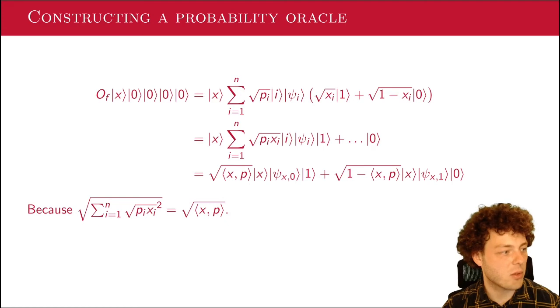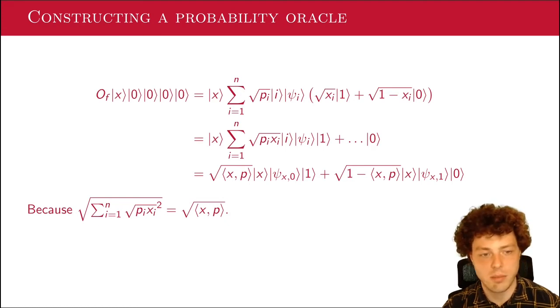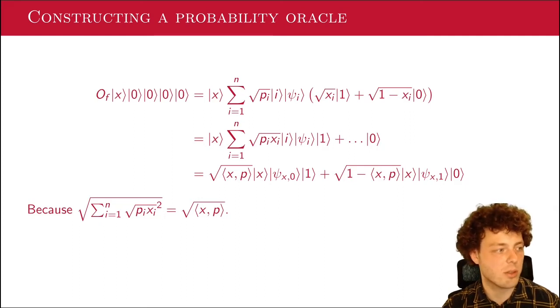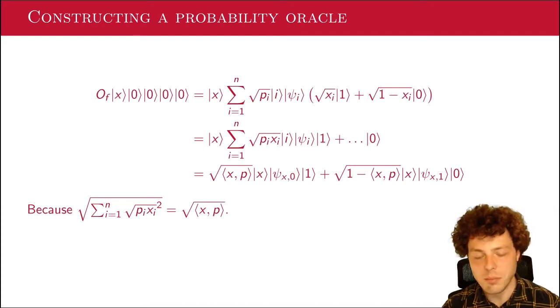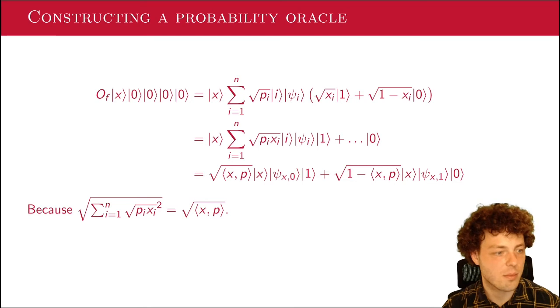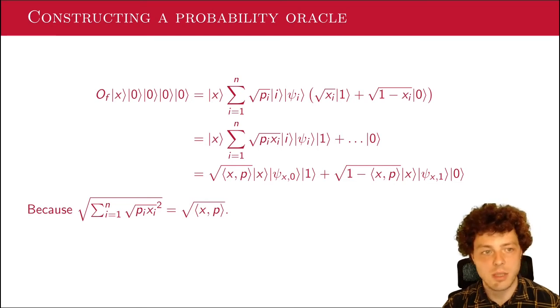To compute this norm, we'll just see that the amplitude in front of the whole ket 1 part will be square root of the inner product of x and p. So we know that the whole state can be written as the square root of the inner product of x and p times ket x, some ψ that we don't care about, and then a one. And the same thing, and then the other part has to be square root of one minus the inner product. Okay, and this is exactly what we wanted for a probability oracle. So we're actually already done. So O_F now is a probability oracle. So we are done already with the first step.